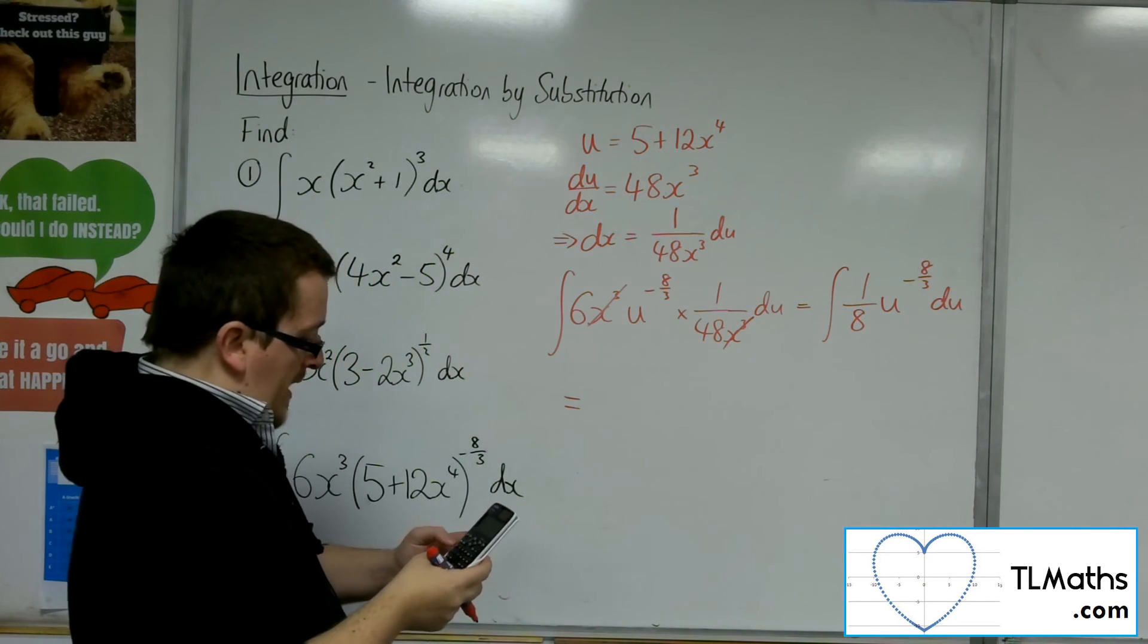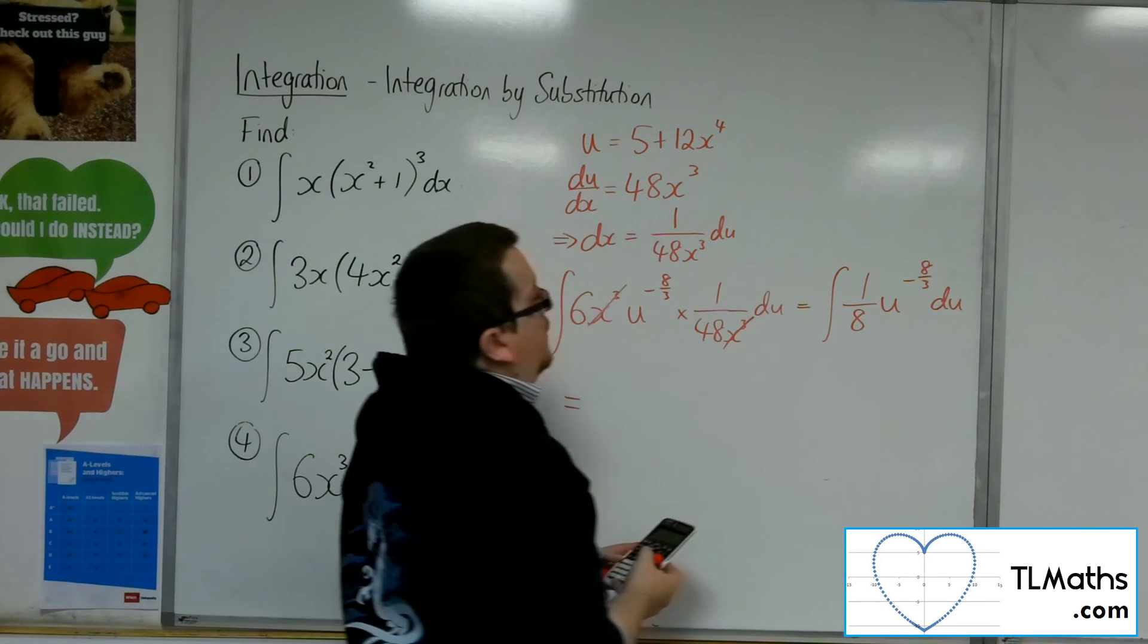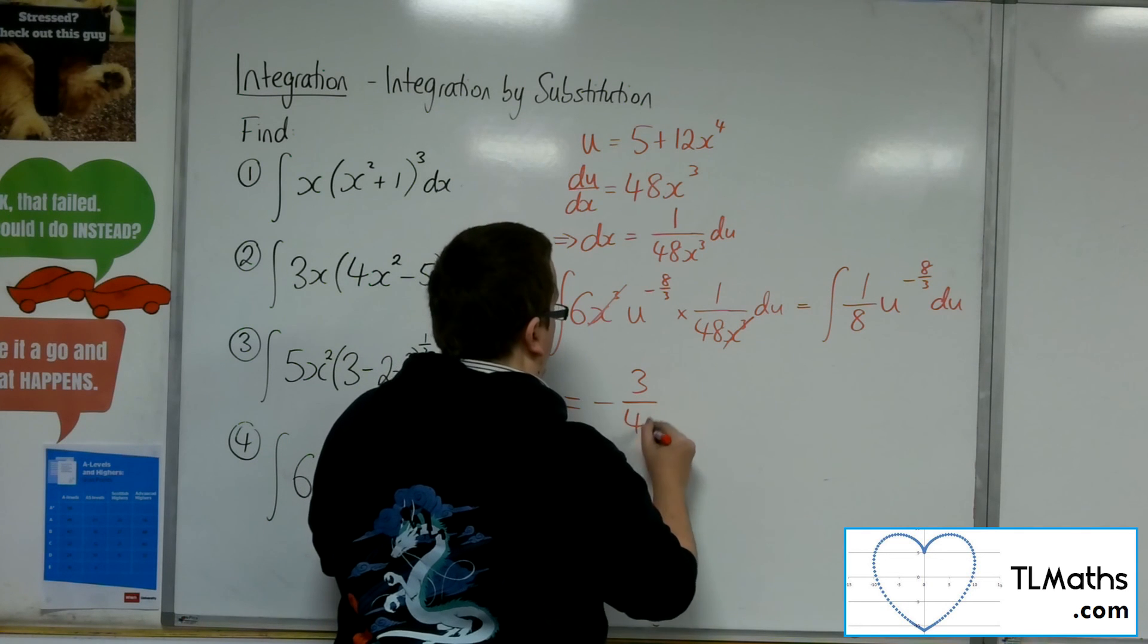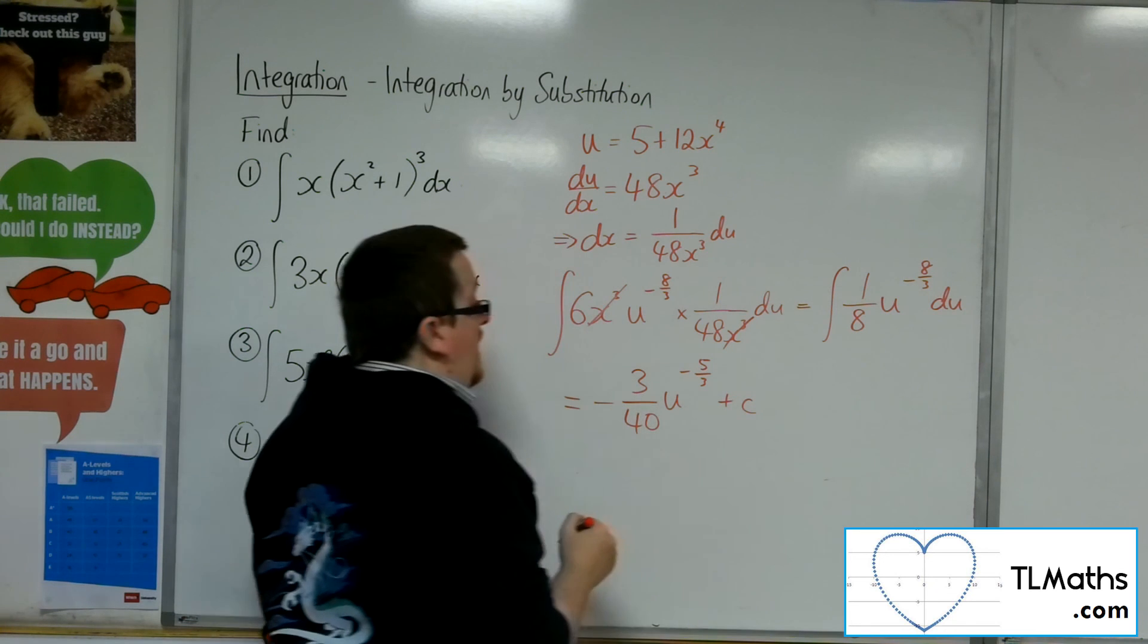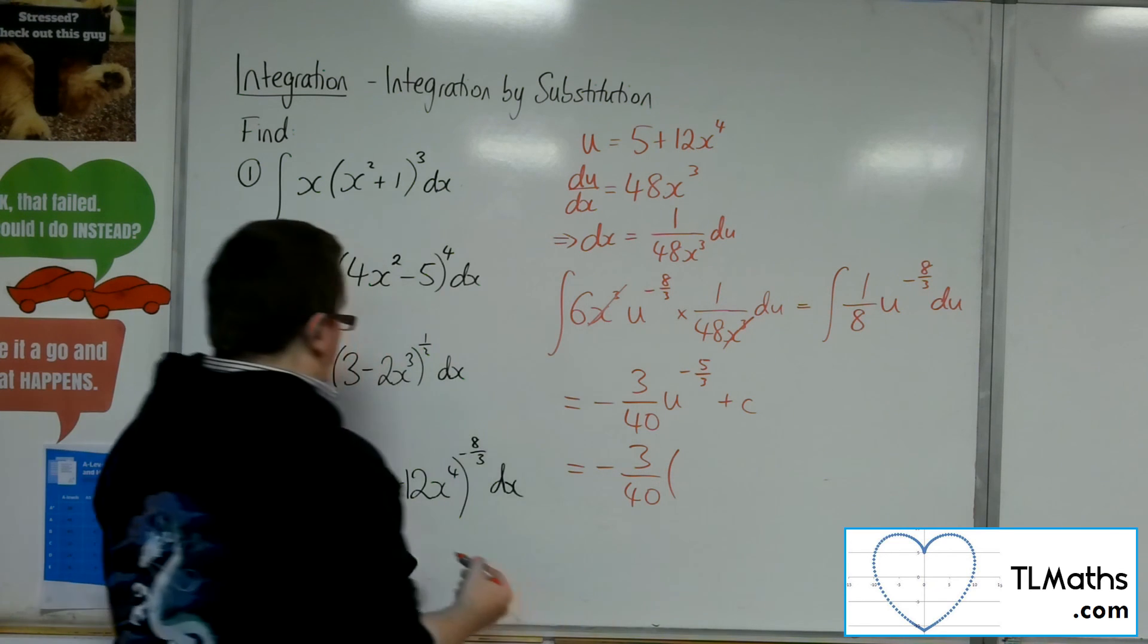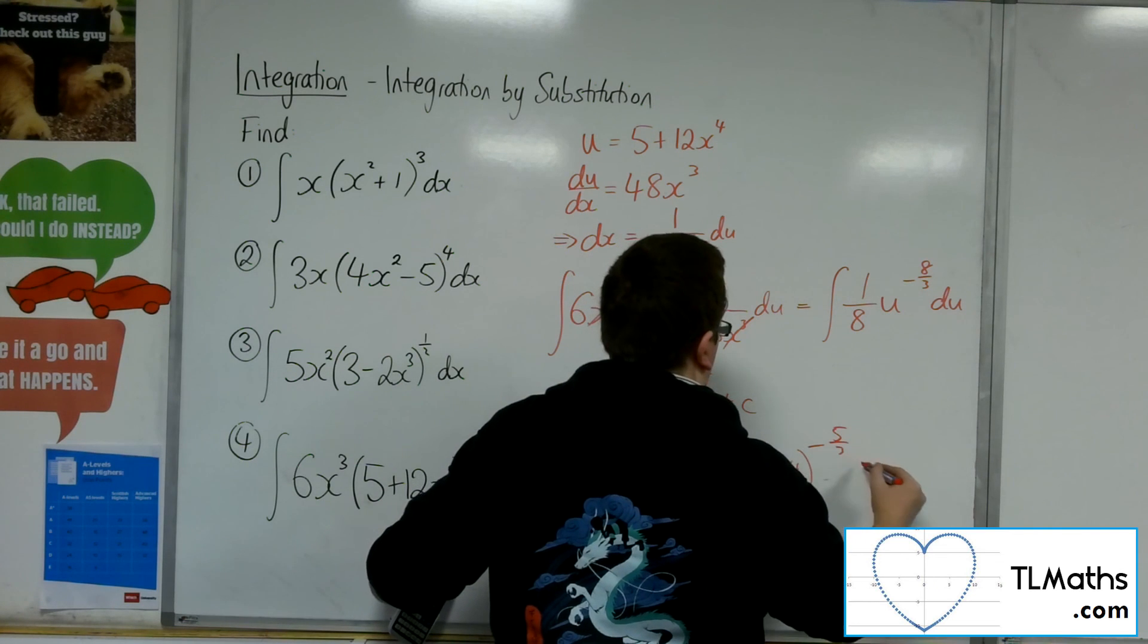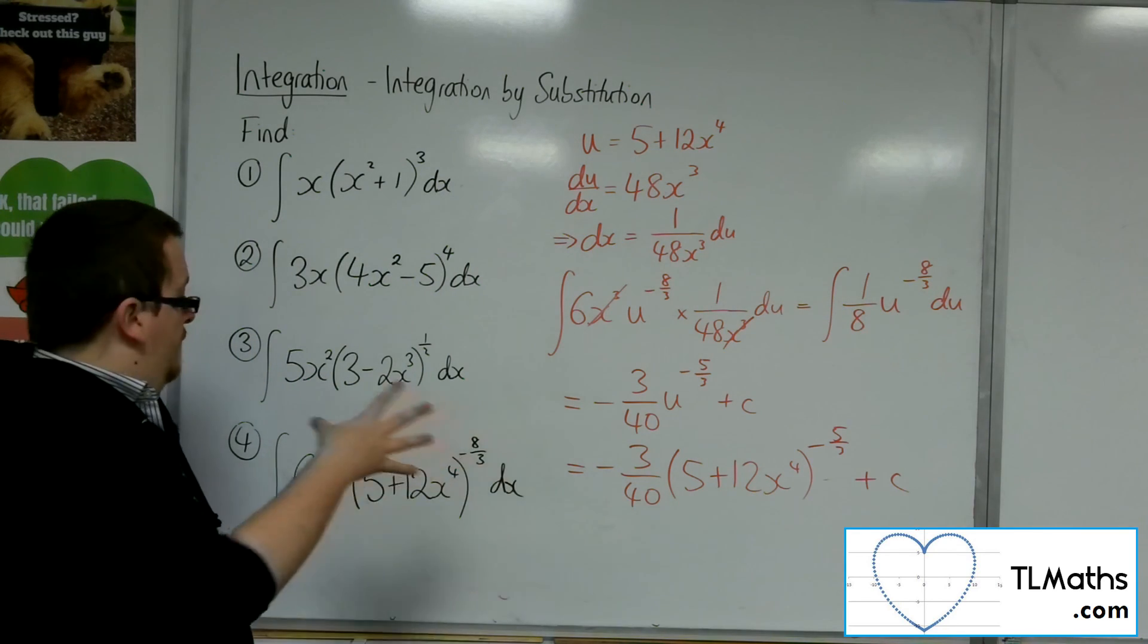So I've got 1 eighth, and I need to divide that by adding 1 to the power. So that's minus 5 thirds. So that's minus 3 fourths u to the minus 5 thirds plus c. So minus 3 fourths, 5 plus 12x to the 4 to the minus 5 thirds plus c. There is my answer for the final question.